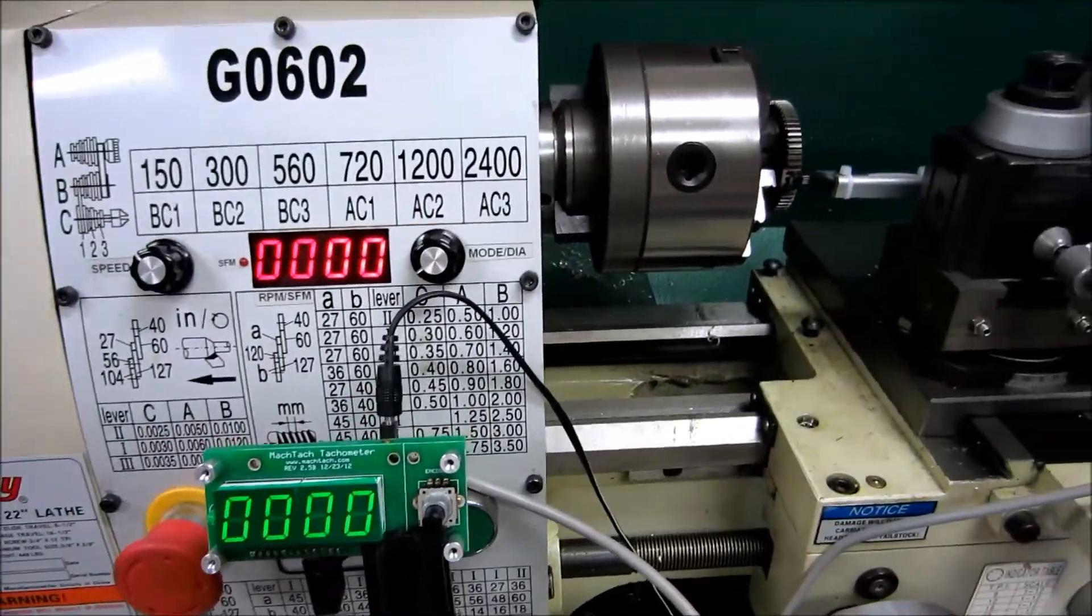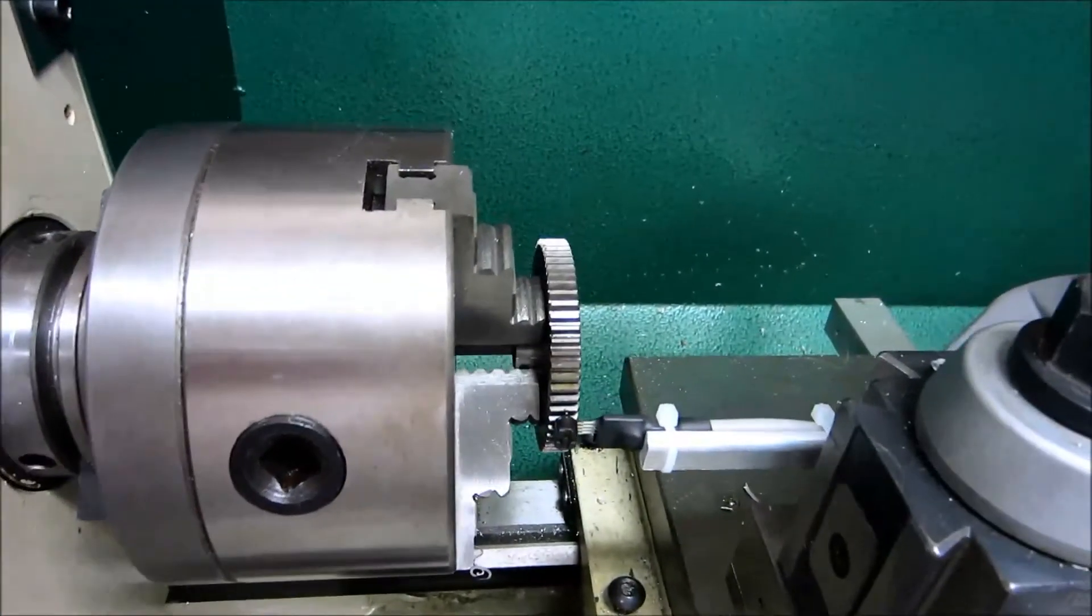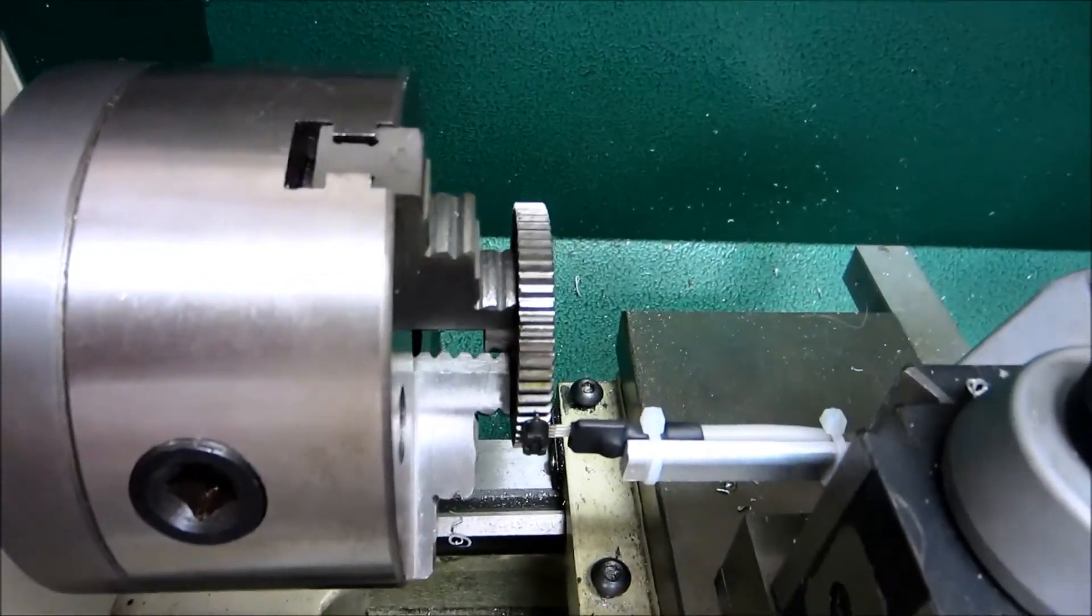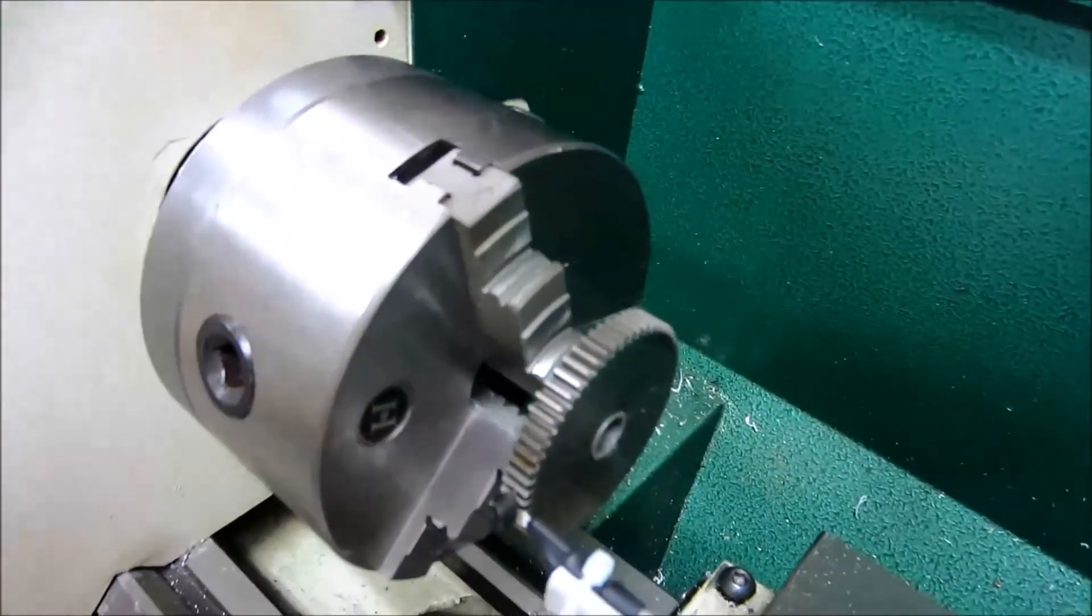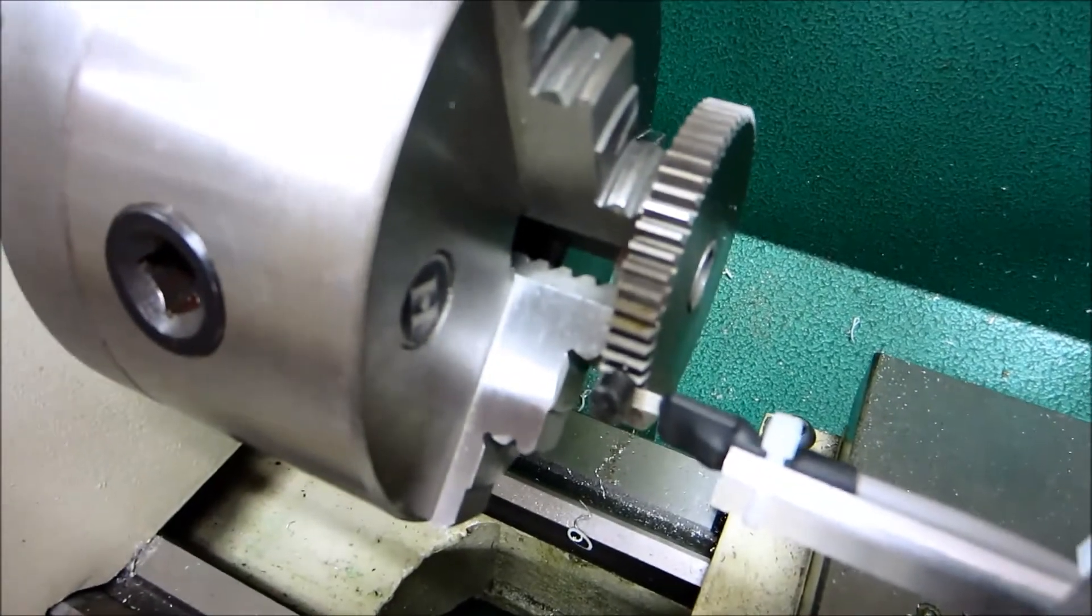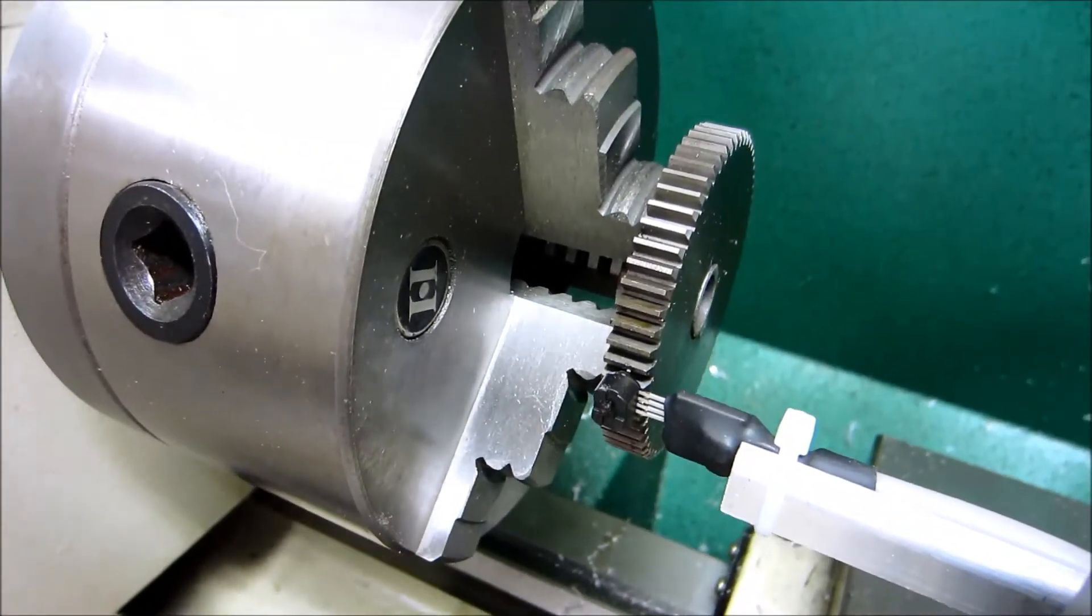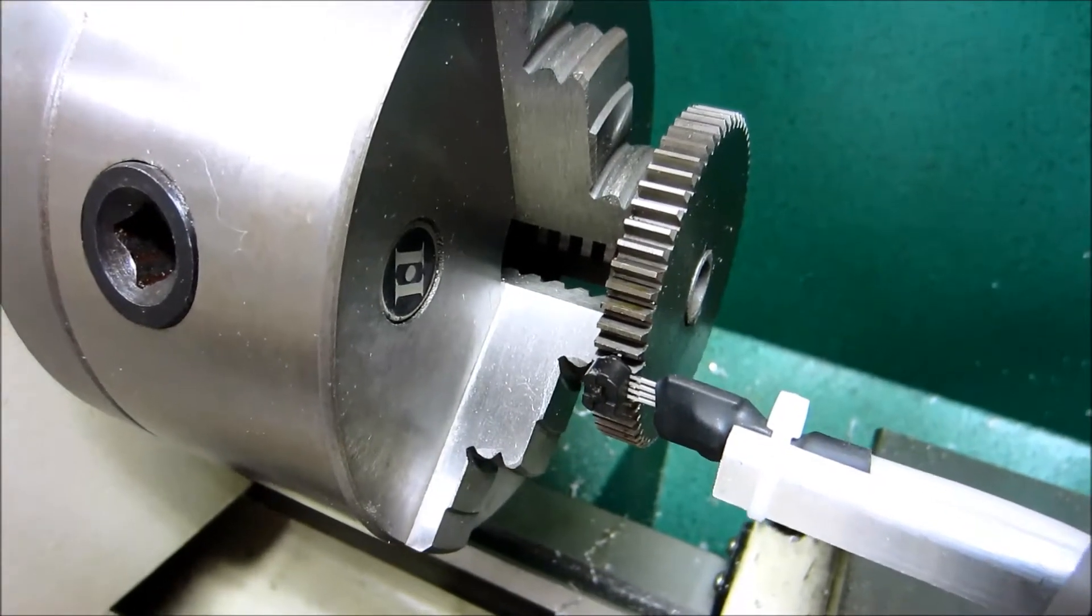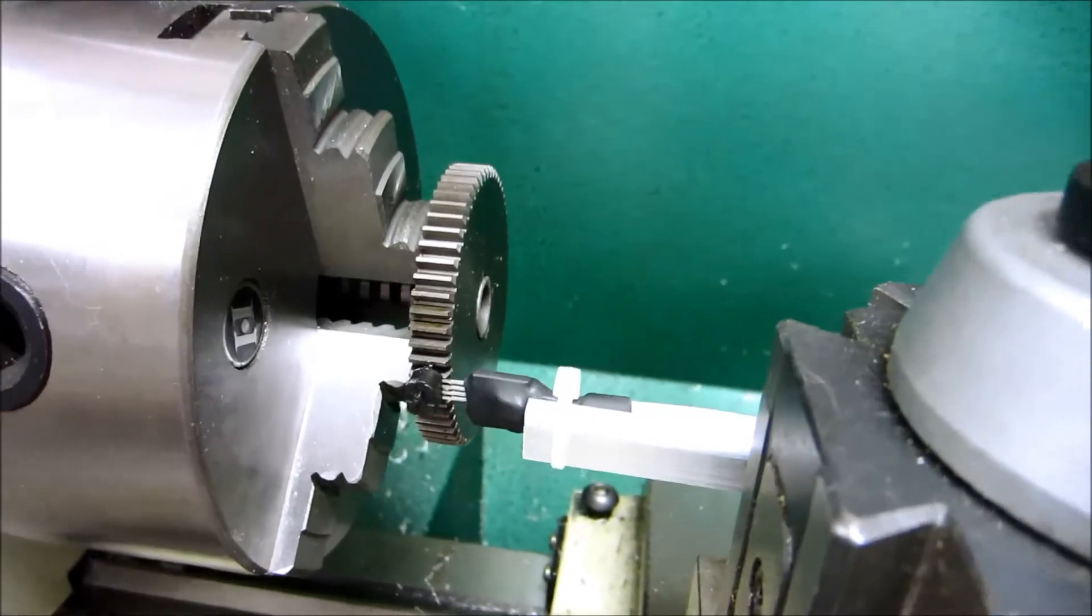This is a setup to demonstrate the use of a gear proximity or gear tooth proximity sensor with the MachTach. As you can see here, I have a 60-tooth gear. And then I have the ATS667, that's an Allegro part, gear proximity sensor right there, mounted on a little stock here that I mounted on my tool post.